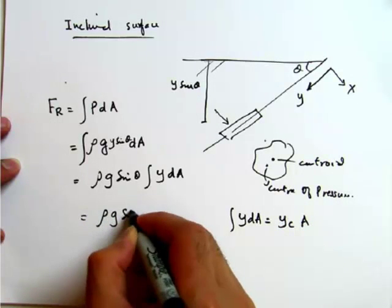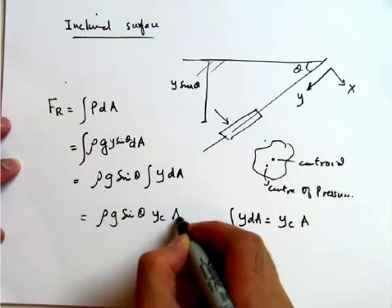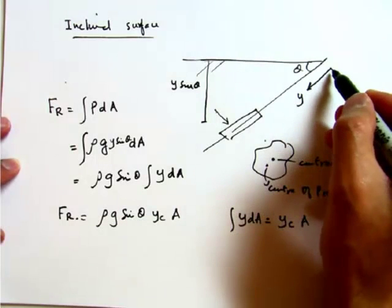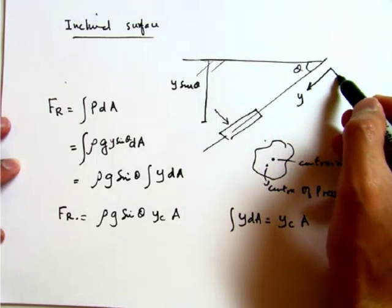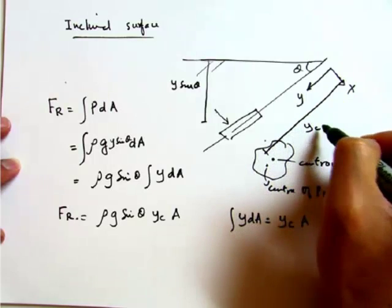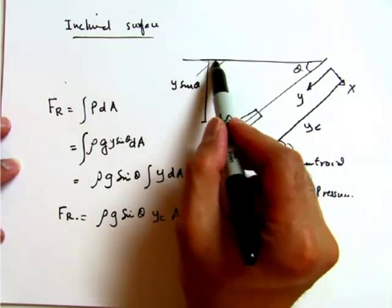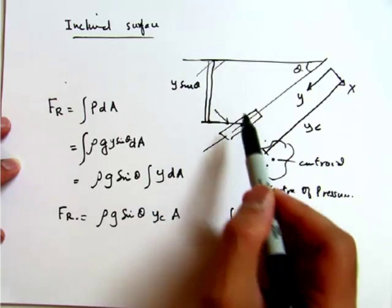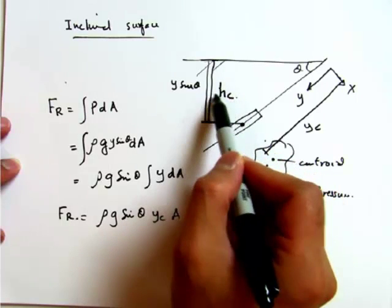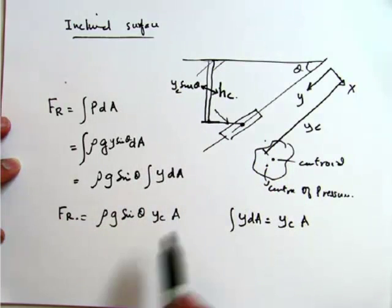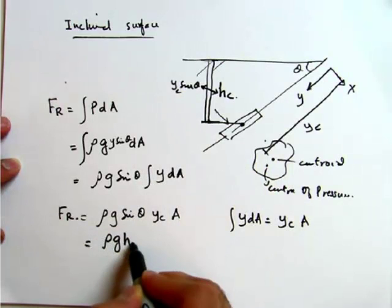The integral of Y dA is the first area moment, which equals Y_C·A. So F_R equals rho·g·sin(theta)·Y_C·A. And since Y_C·sin(theta) equals H_C — the vertical depth to the centroid — we can write this as F_R equals rho·g·H_C·A. That is the magnitude of the resultant force.